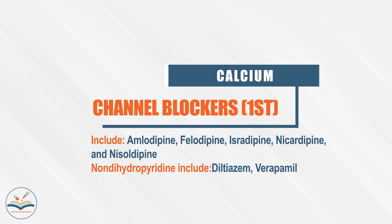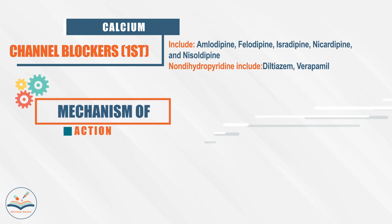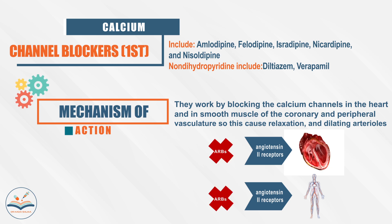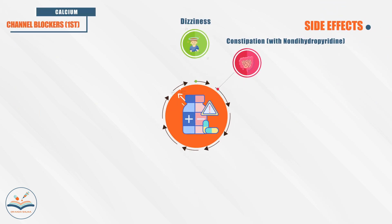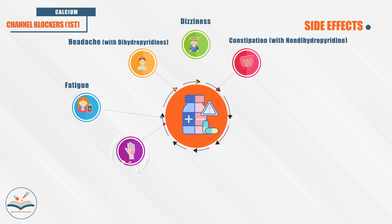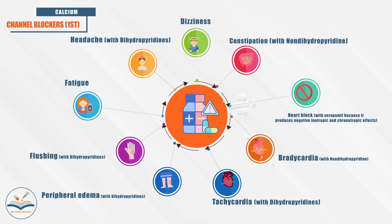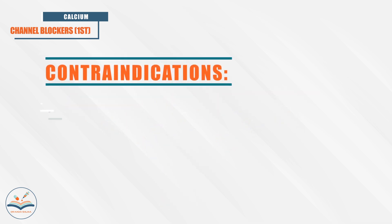Calcium channel blockers have two subclasses: dihydropyridines, like amlodipine, and non-dihydropyridines, like diltiazem. They block calcium channels in the heart and smooth muscles, causing relaxation and dilation of arterioles. Side effects include constipation, CNS side effects, flushing, peripheral edema, tachycardia, bradycardia, and heart block. We have to monitor heart rate.